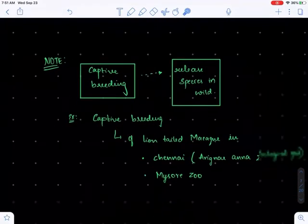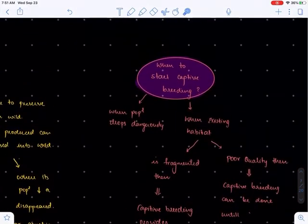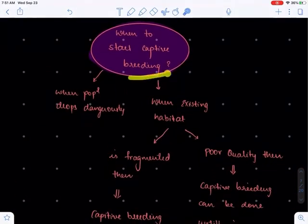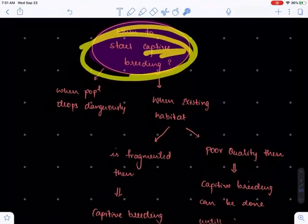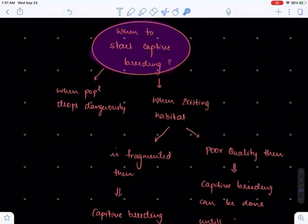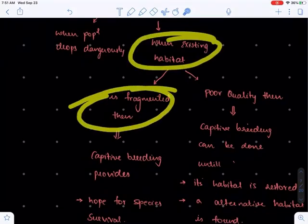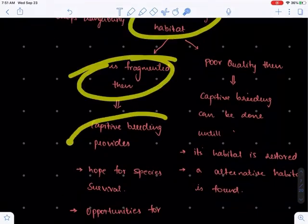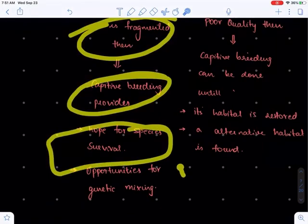Let's understand when to start captive breeding. We go for captive breeding whenever we find that a particular species population is dropping dangerously and when the existing habitat is fragmented. It provides hope for the species survival and opportunities for genetic mixing.